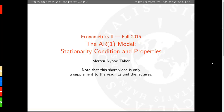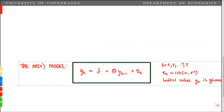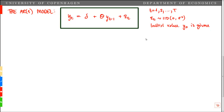In this video, we again consider the AR1 model, but now we look at the stationarity condition and the properties of the model given stationarity. The AR1 model is given by: yt equals delta plus theta times yt minus 1 plus a shock or innovation epsilon t, for t equal 1, 2, all the way to capital T, which is our sample size.